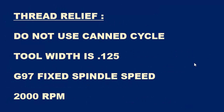For the thread relief we're just going to write some manual code — we're not going to use a canned cycle. We're going to rapid into position, feed to the diameter that we're going to be grooving, and then rapid back out. The tool width is 125 thousandths wide. We're going to use G97 fixed spindle speed at 2000 RPM.